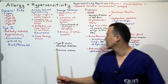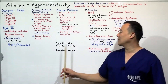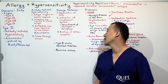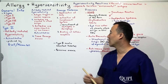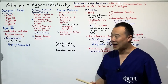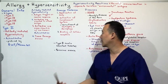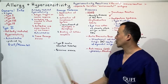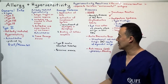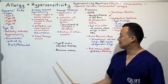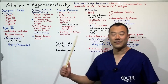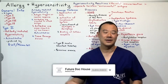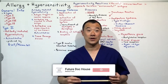Type 2 insulin-resistant diabetes: auto-antibodies bind to insulin receptors so insulin can't get through, causing diabetes. And of course, pernicious anemia — look it up.